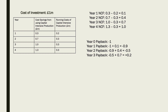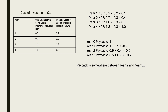Now we do the payback. We start with minus 1 million — that's the cost of the investment — and then we add on sequentially the net cash flows. Year one NCF was plus 0.1, so we add that to minus 1, giving minus 0.9. Then for year two we get minus 0.5. Adding year three's NCF of 0.7 gives a plus number. So we can see the cumulative cash flow switches from minus 0.5 to plus 0.2 between year two and year three.